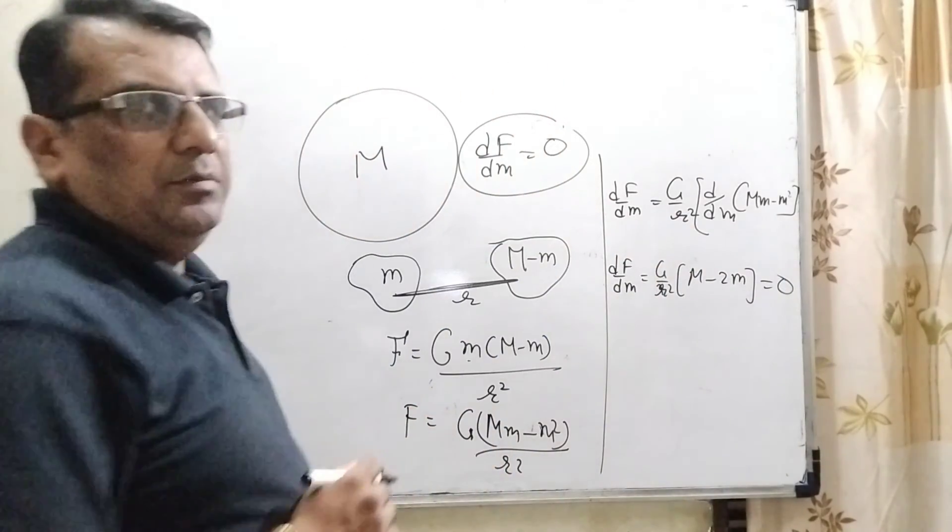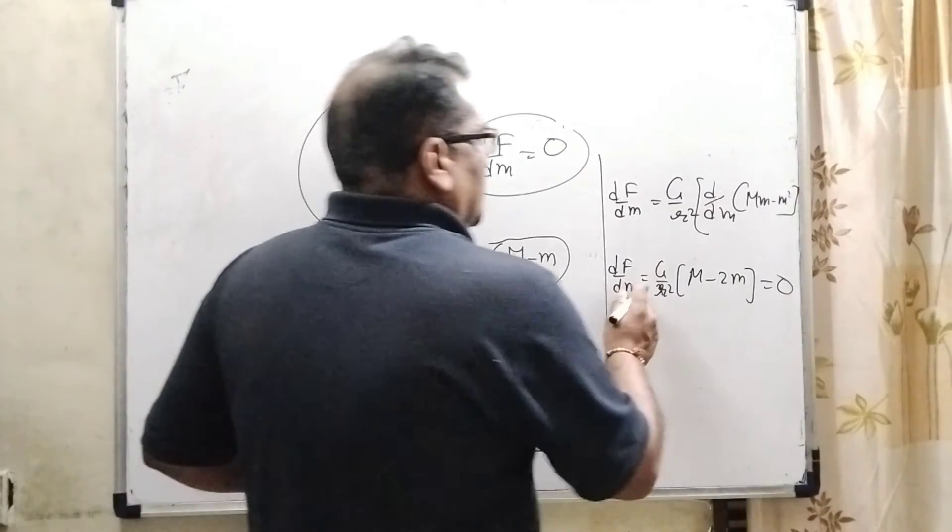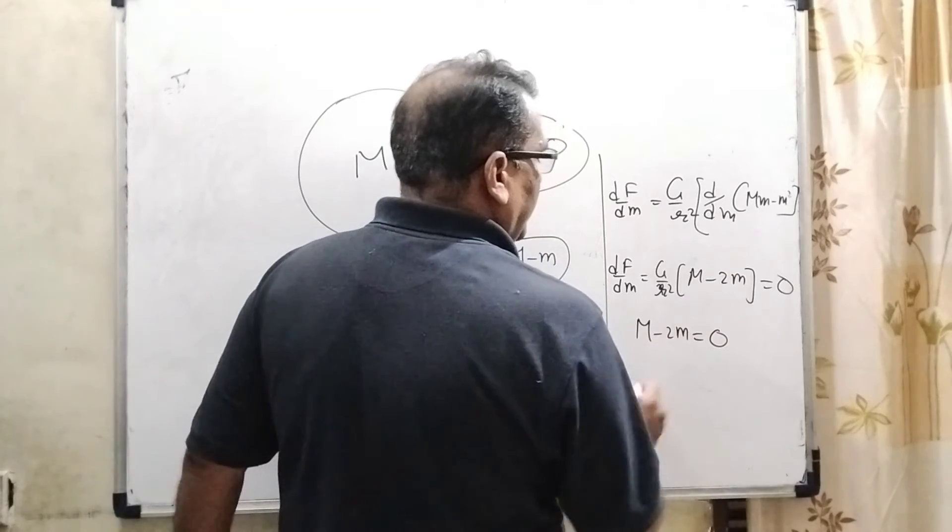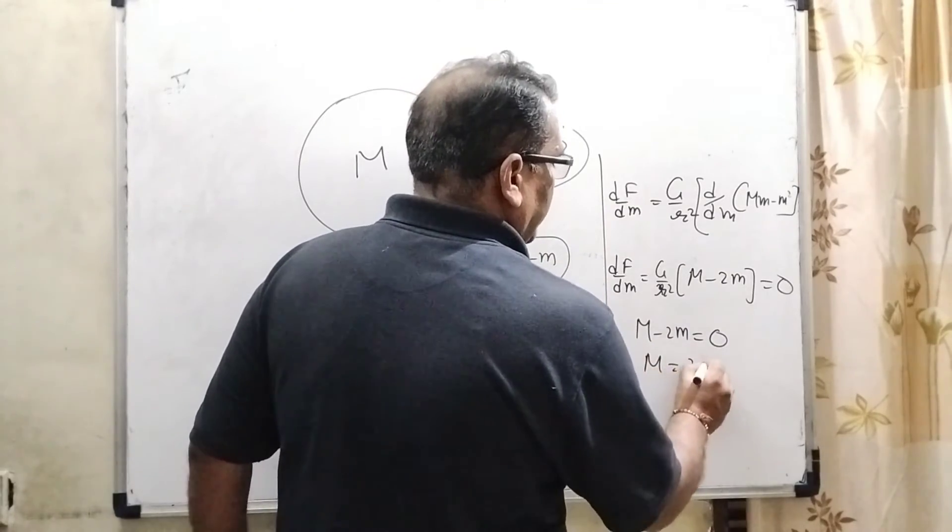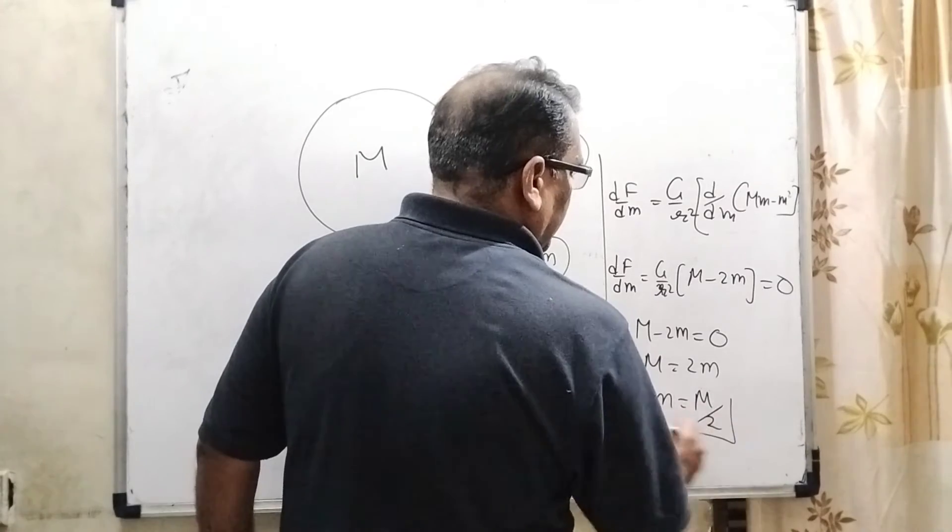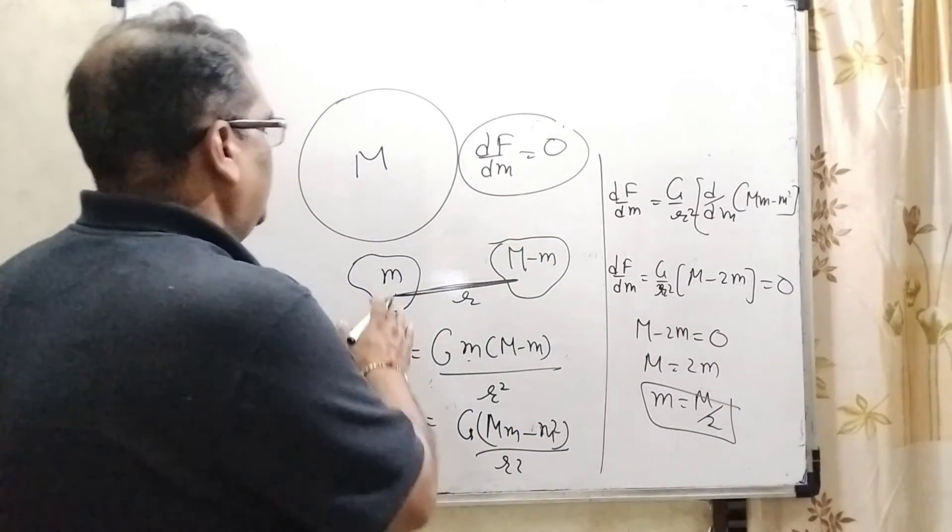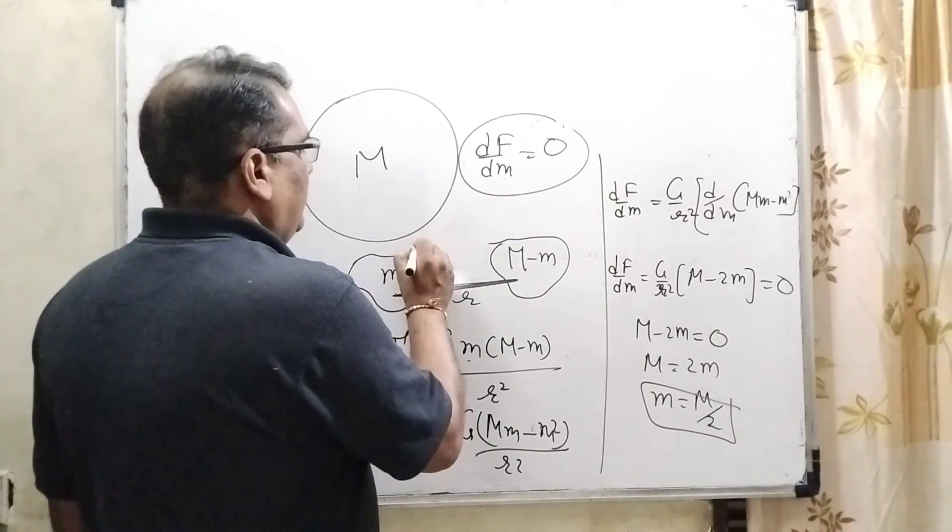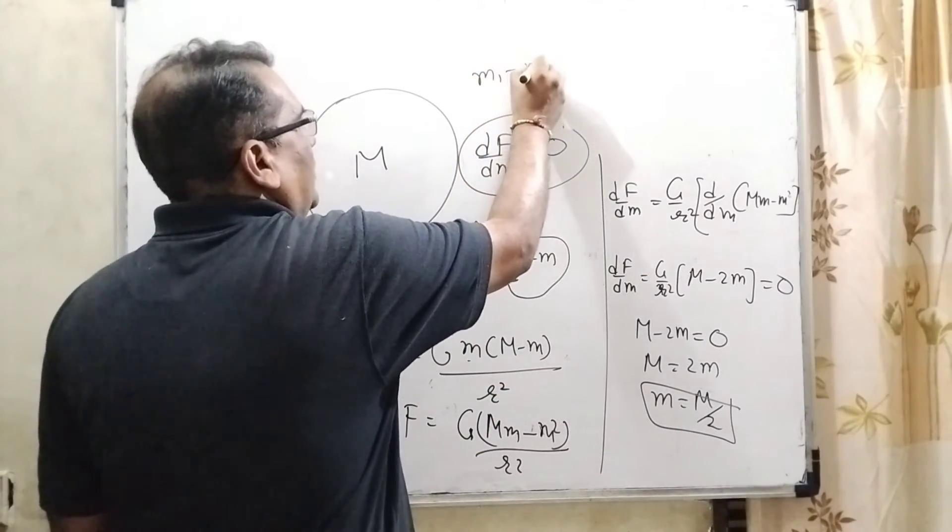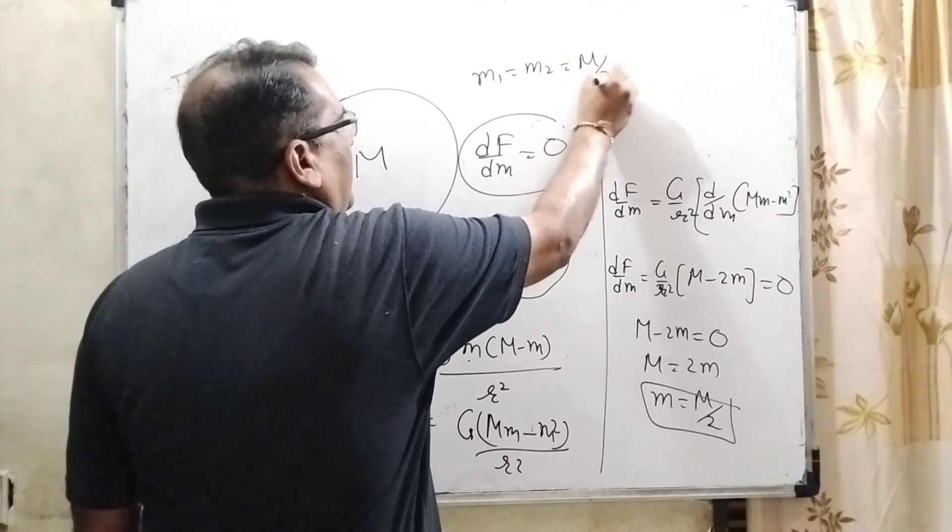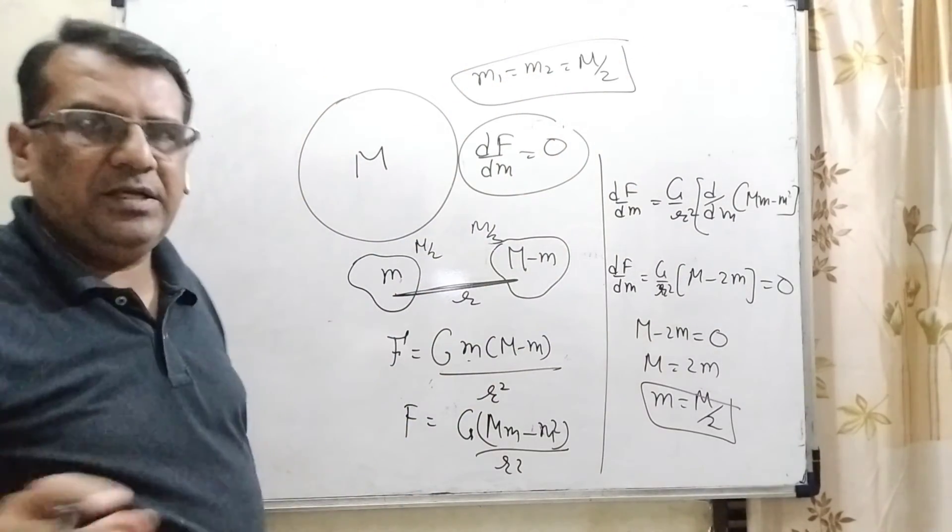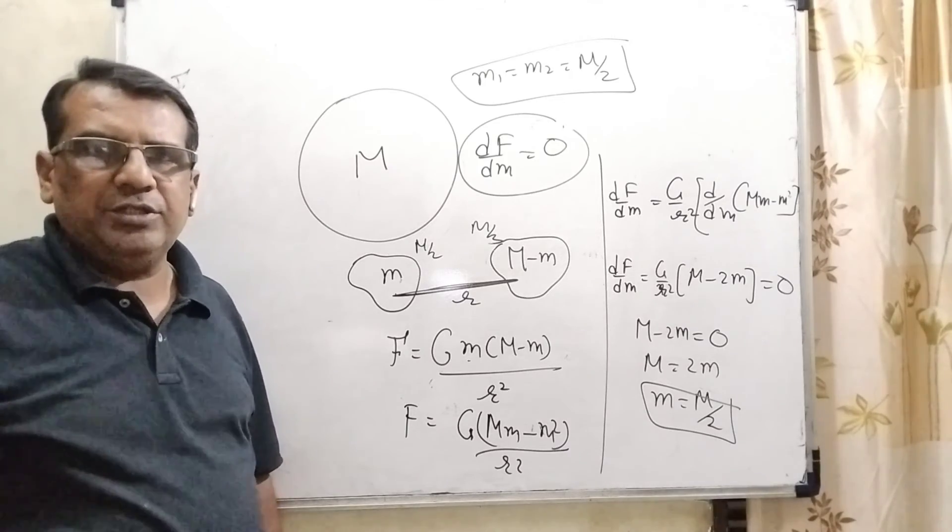Condition of maxima. So here capital M minus 2m is equal to zero, and m equal to 2m. So small m equal to capital M by 2, that is the relation. So therefore this part is M by 2, so remaining part is also M by 2, means m1 equal to m2 equal to M by 2. In that condition the force of gravitational force is maximum. I hope so you understood this question.